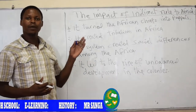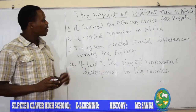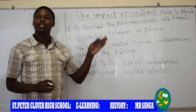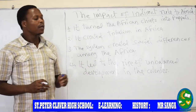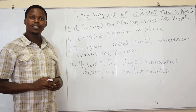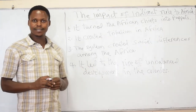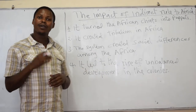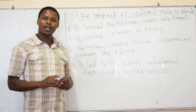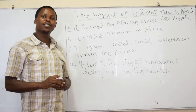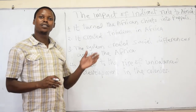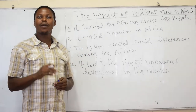Another part was the impact of Indirect Rule on Africa. The first impact was that it turned African chiefs into puppets. The African chiefs were used by the British to colonize their fellow Africans and make them work for the white government. These chiefs were no longer working for the interests of their subjects; instead, they reported Africans' plans to the whites.